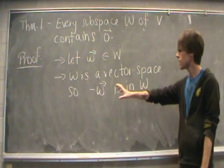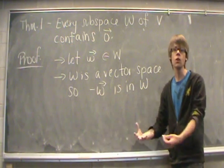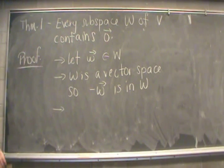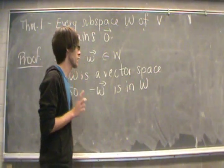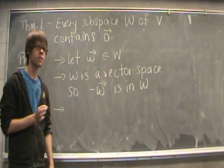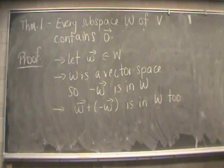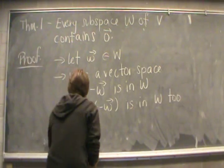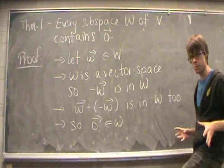That means if we scalar multiply our element w by minus 1, it's still going to be inside our subspace. Because W is also a vector space, we can perform addition — the same addition defined in V. What we're interested in is adding together w and minus w, and when we add those two elements together, we end up with the zero vector. This is true for any subspace.